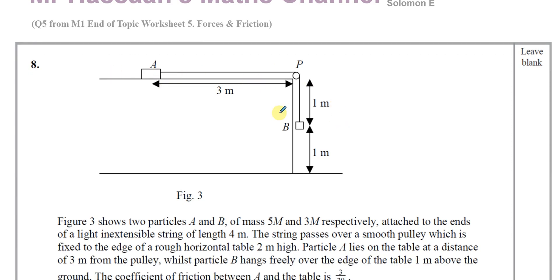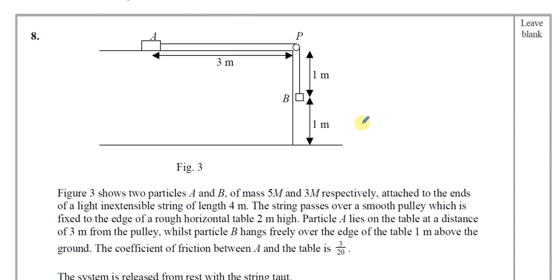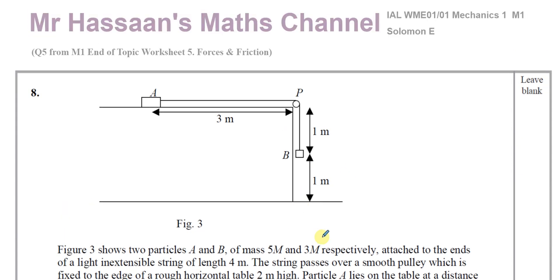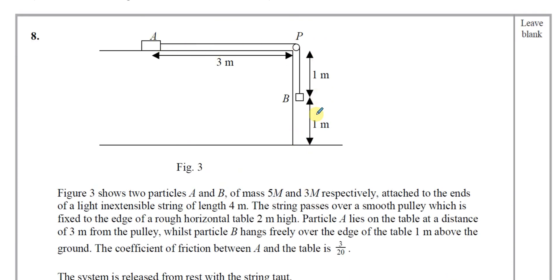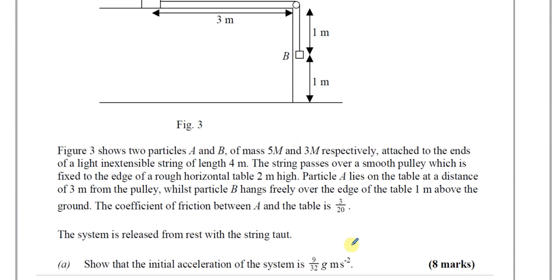We have a question about particles connected together on this plane, with one hanging down. Figure three shows two particles A and B of mass 5m and 3m respectively, attached to the ends of a light and inextensible string of length 4 meters. The string passes over a smooth pulley fixed to the edge of a rough horizontal table. Particle A lies on the table at a distance of three meters from the pulley, whilst particle B hangs freely over the edge one meter above the ground. The coefficient of friction between A and the table is 3 over 20. The system is released from rest with the string taut. Show that the initial acceleration of the system is 9 over 32 g meters per second squared.